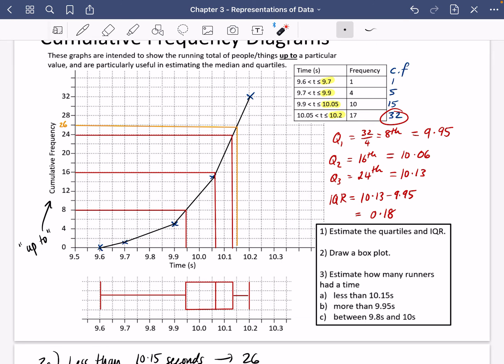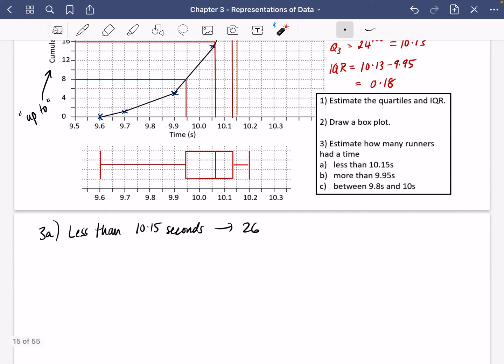So 8 people had up to 9.95 seconds. So if we want more than 9.95 seconds, well, there are 32 people in total and 8 of them were less than 9.95. So I think that means that there are 24 people who are more than 9.95.